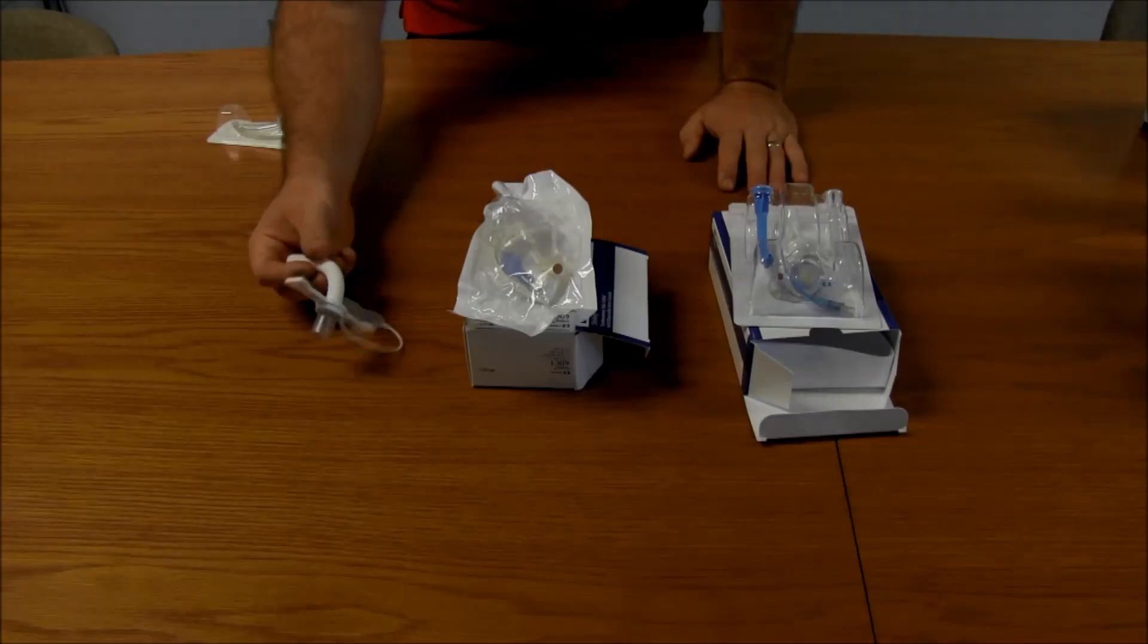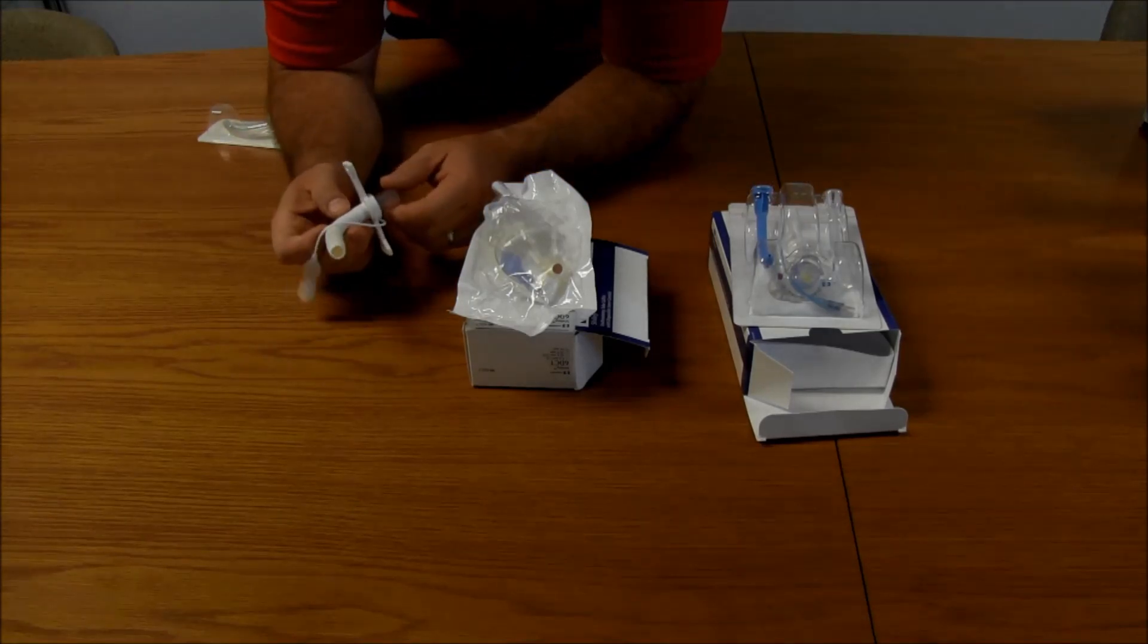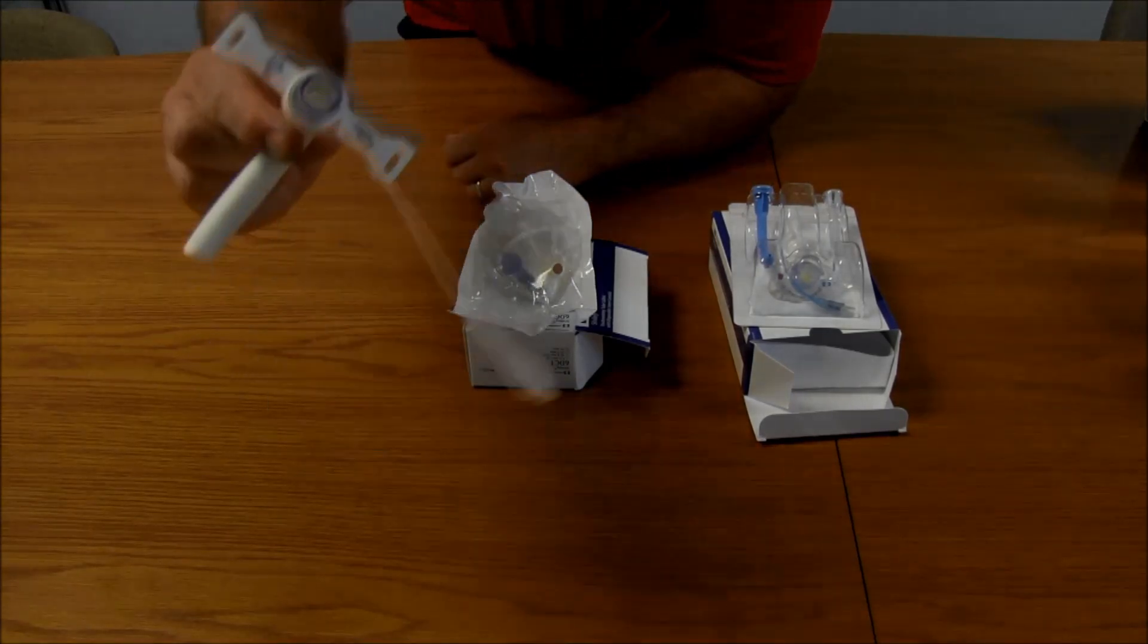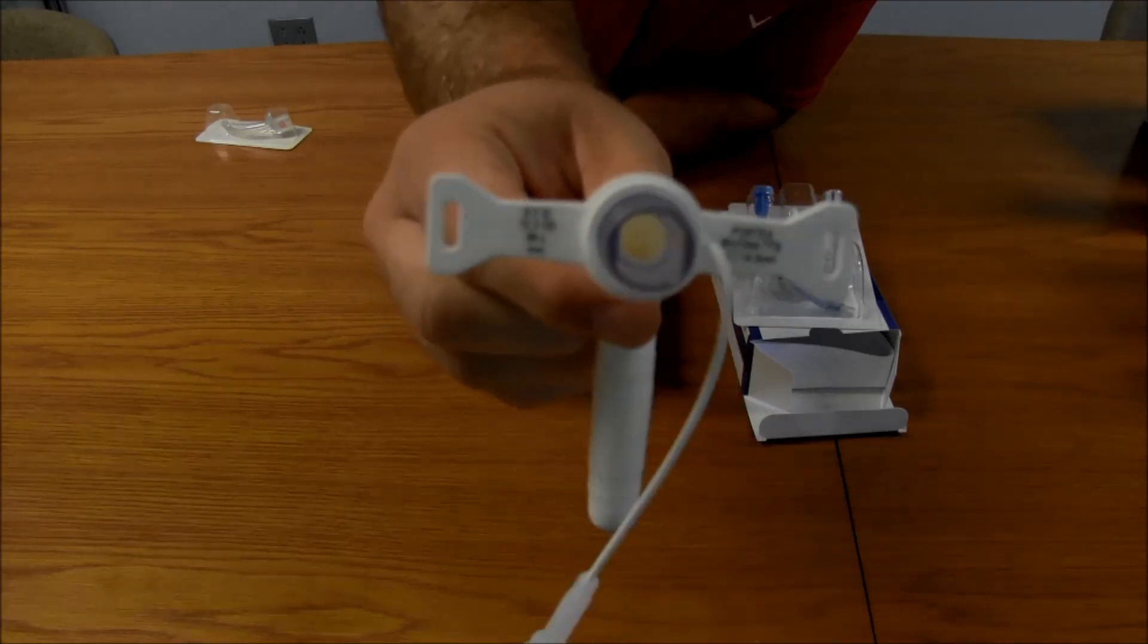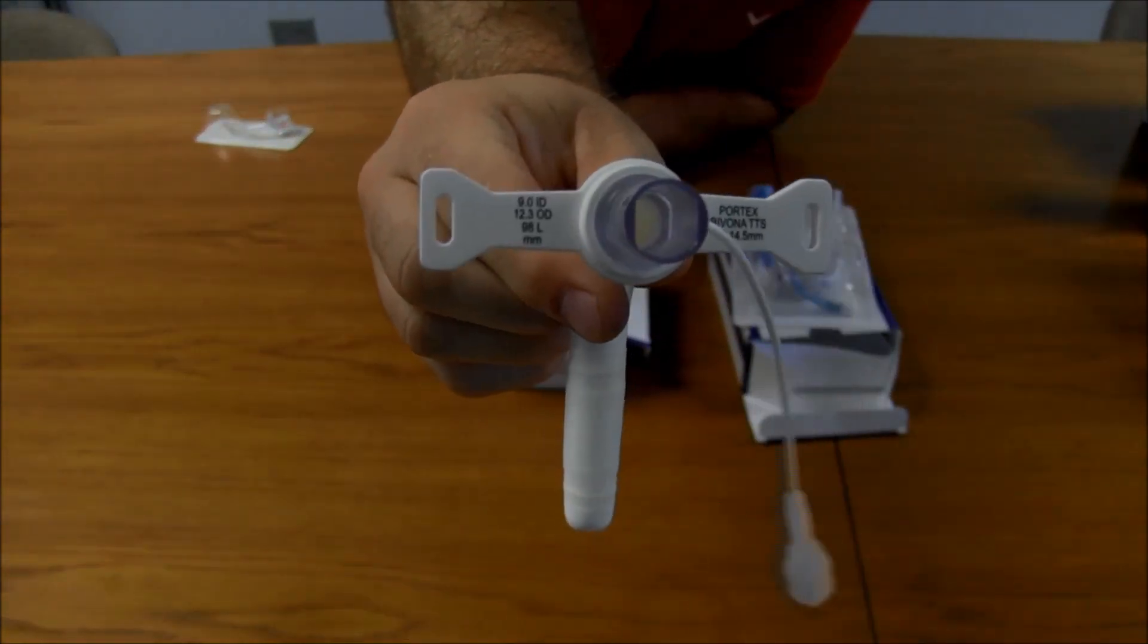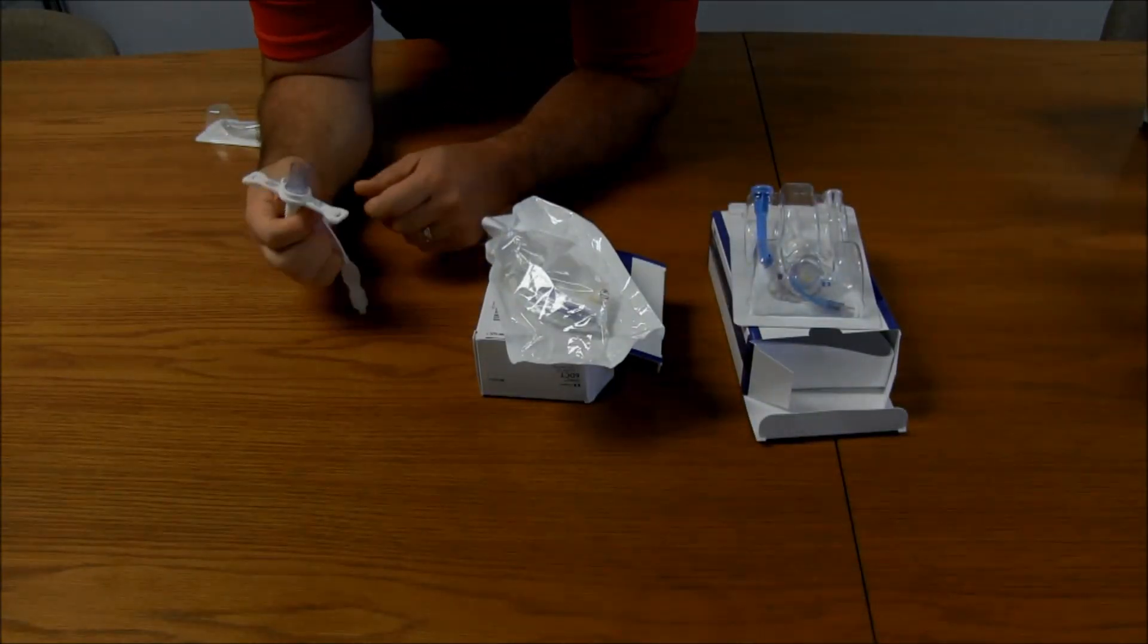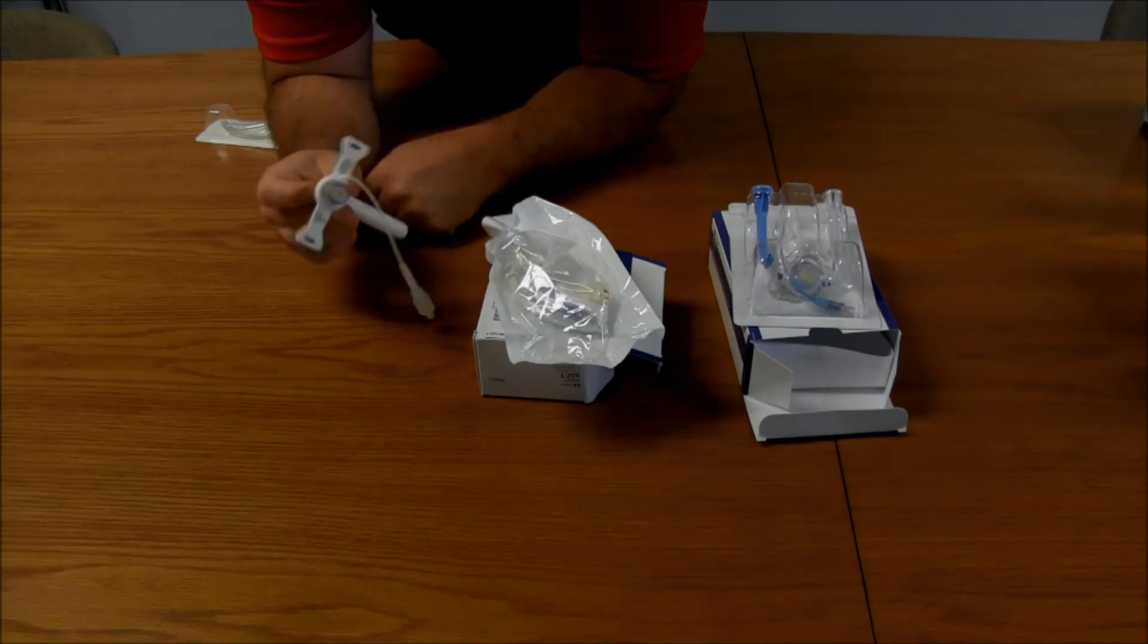So I have all three types of trachs here. Of course, this is the Portex Bavona that we're used to. This is an extended one. You can see that it is a 9.0 inner diameter. And this is a fixed flange. So the flange is fixed. It does not have an inner cannula on it.